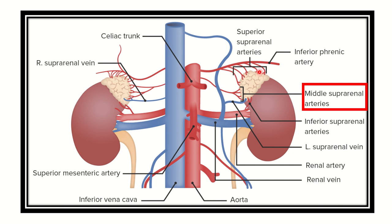Here we can see this is the superior suprarenal artery. This superior suprarenal artery arises from the inferior phrenic artery. So the superior suprarenal artery originates from the inferior phrenic artery.